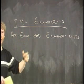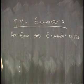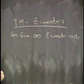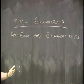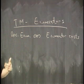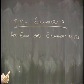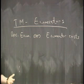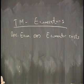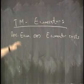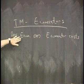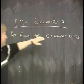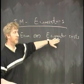A recursively enumerable set has a regular Turing machine program which takes inputs and will recognize if that input is part of its set. It will say yes if the answer is yes, but might not say no. So this is a regular Turing machine recognizer, and this is an enumerator.